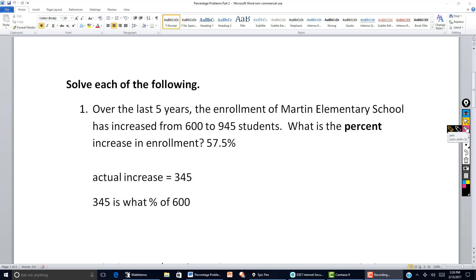We know the actual increase, so we want the percent increase. I can set it up this way and say, 345 is equal to what percent of 600. The what percent is the unknown here, and that's going to be r. Of means multiply. So this is going to be r times 600, or 600 times r, either way.